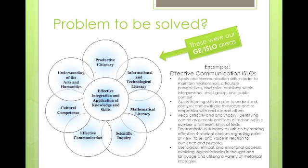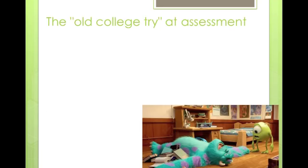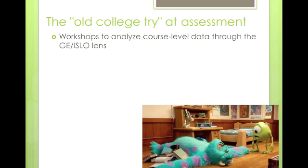What you see here are some bulleted institutional student learning outcomes that fell under effective communication. As you read through them, they're very detailed, very complex, and multifaceted — and as a result, we found that they were somewhat difficult to assess. We did give it the old college try at assessment. That included a number of ways in which we tried to take what we've done at the course level. We have mapped all of our course level SLOs to our program level SLOs and also to our institutional level SLOs.